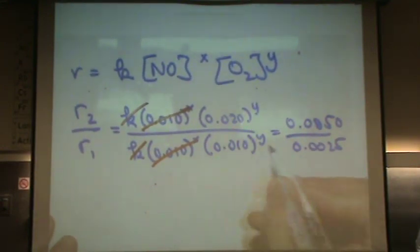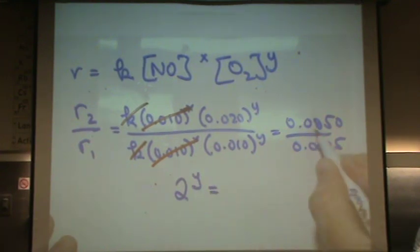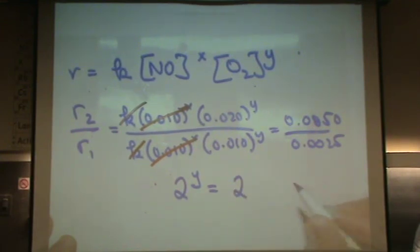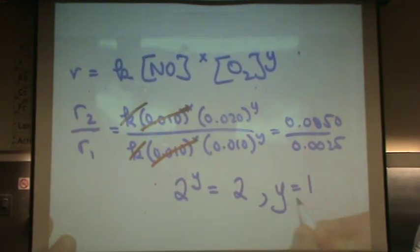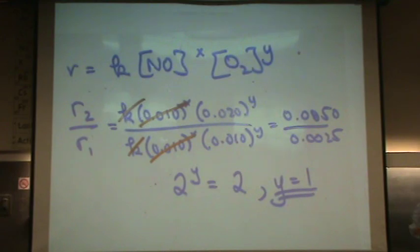So, if I do this, 0.02 divided by 0.01, that's just two to the y power. And 0.005 divided by 0.0025, that's just two. So, y must equal one. So, the order of reaction with respect to O2 is one.